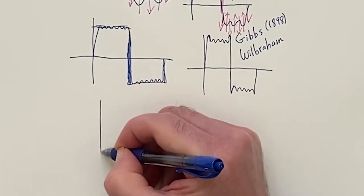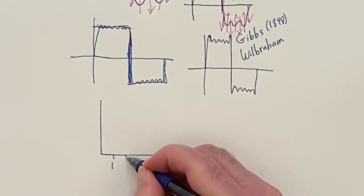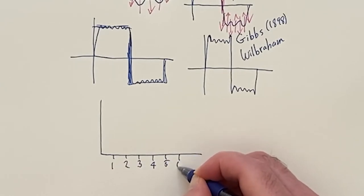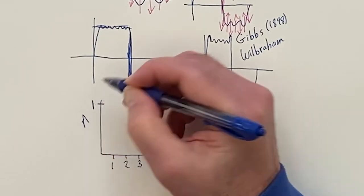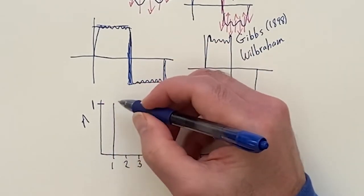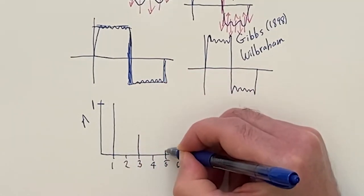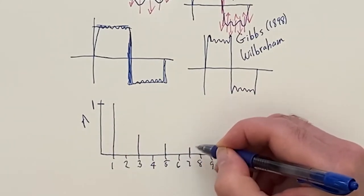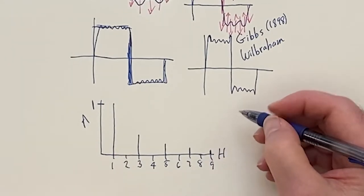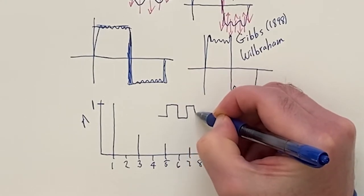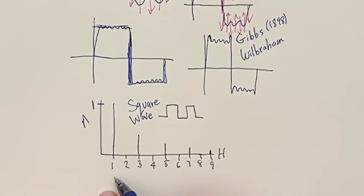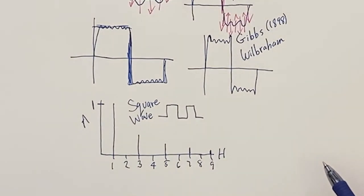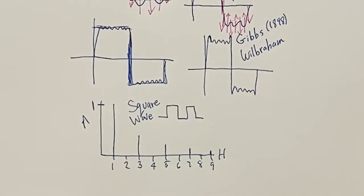We can write the recipe for the spectrum. If we have the harmonics 1, 2, 3, 4, 5, 6, 7, 8, 9, and the amplitude: you have a full cup of the first harmonic, none of the second, then one-third, then zero, then one-fifth (0.2), then a seventh is about 0.14, and a ninth is 0.11. That's the spectrum that goes with the square wave. You can put this on an index card as a recipe. However, you should also put the phases down — and here, all the phases are zero.